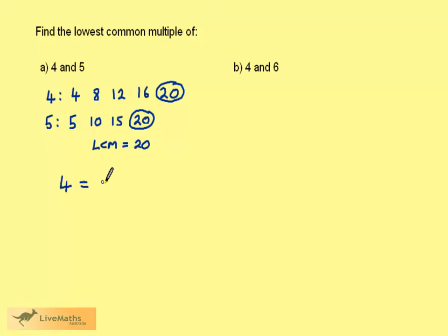4 could be written as 1 times 2 times 2. Strictly speaking, of course, we don't need the 1, but I do use it. 5 is 1 times 5.